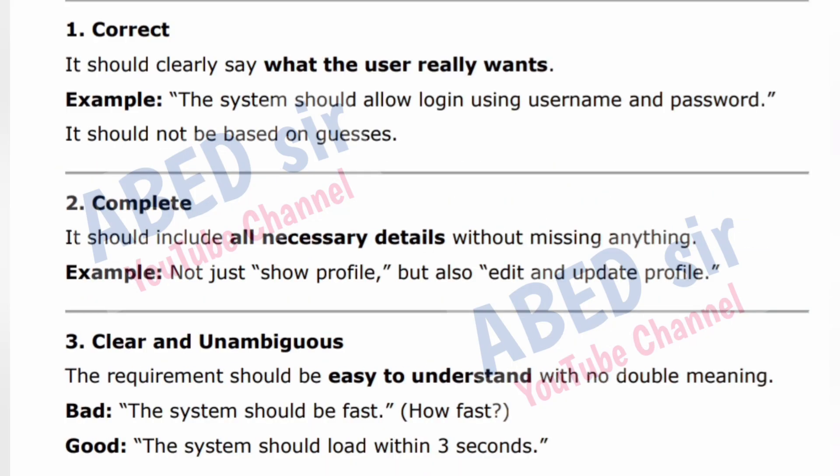Here are the main characteristics of a good requirement. 1. Correct — it should clearly say what the user really wants. Example: 'The system should allow login using username and password.' It should not be based on guesses. 2. Complete — it should include all necessary details without missing anything. Example: not just 'show profile' but also 'edit and update profile.' 3. Clear and Unambiguous — the requirement should be easy to understand with no double meaning. Bad: 'The system should be fast' — how fast? Good: 'The system should load within 3 seconds.'